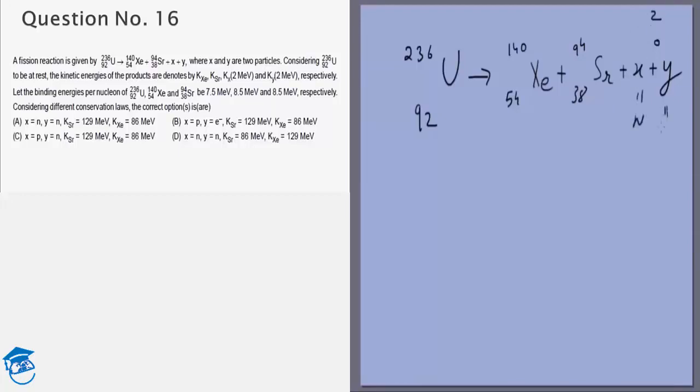That means X is a neutron and Y is a neutron. They cannot be protons, they cannot be electrons, because protons and electrons would have atomic numbers and we do not want that.